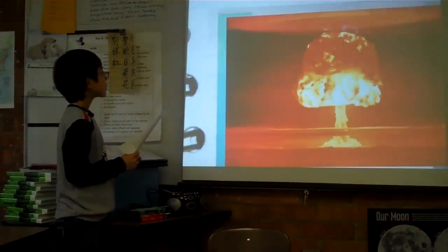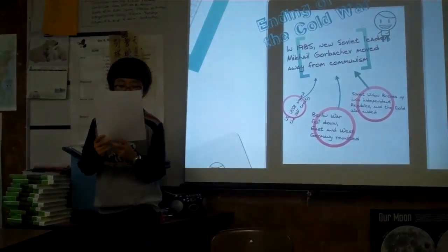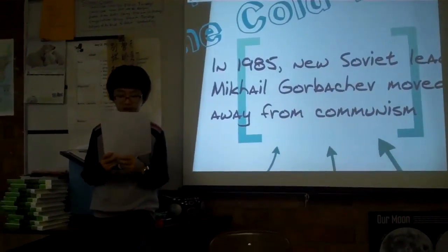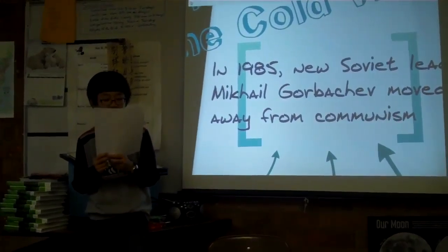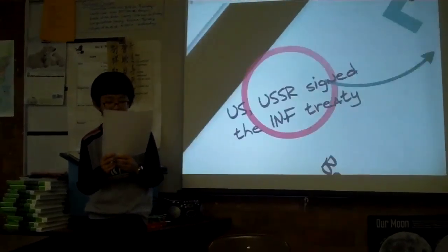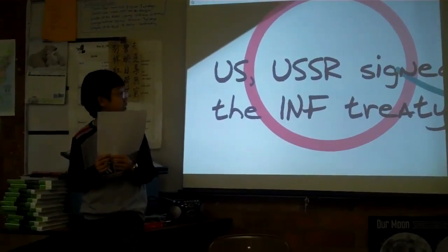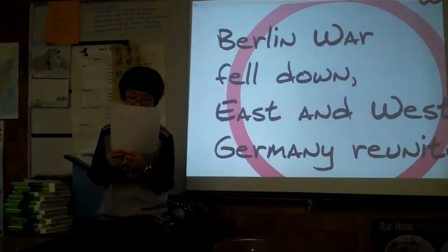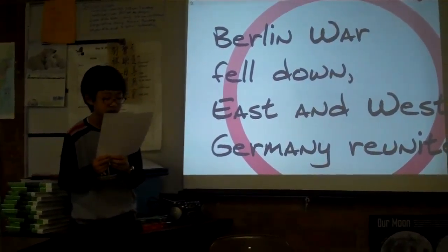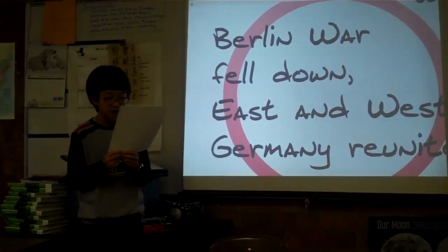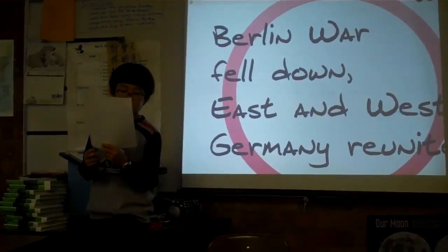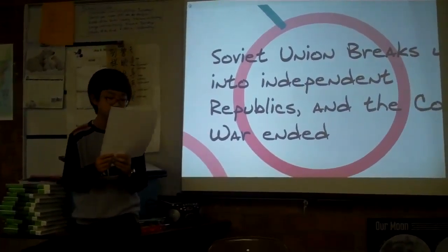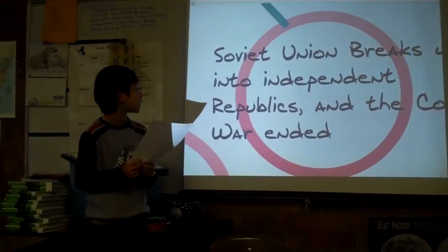The Cold War finally ended in the early 90s. In 1985, the new Soviet leader was Mikhail Gorbachev, and he began to move away from communism. The United States and the USSR signed the Intermediate-Range Nuclear Forces, INF Treaty, and removed the medium and short-range nuclear missiles. Then the Berlin Wall fell down, Eastern and West Germany reunited, and finally the Soviet Union broke up into independent republics and the Cold War ended.